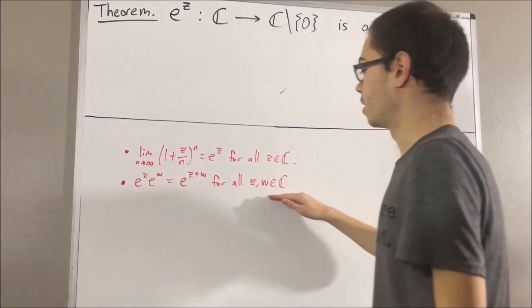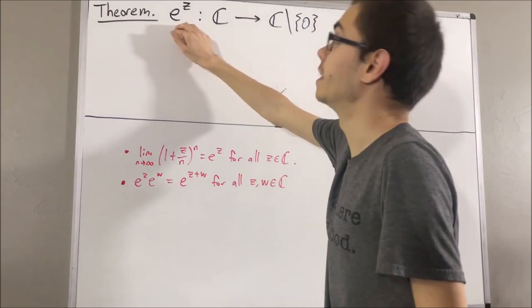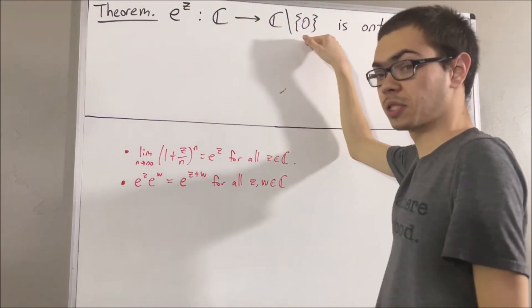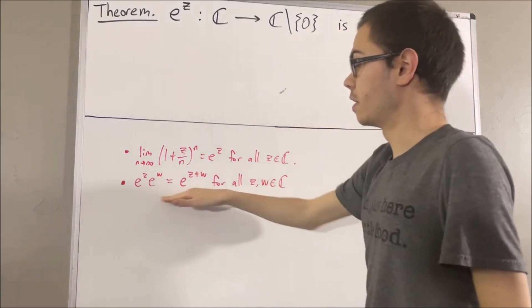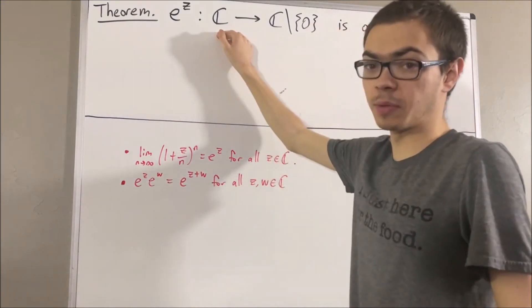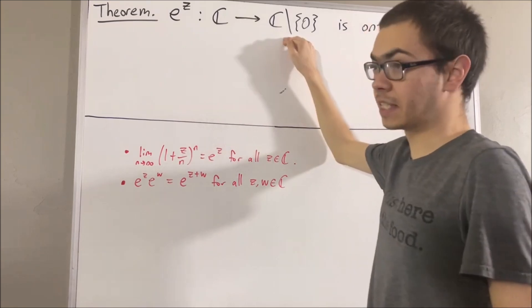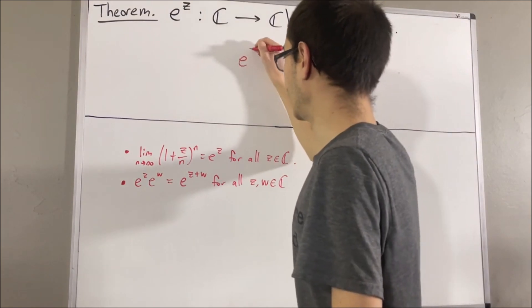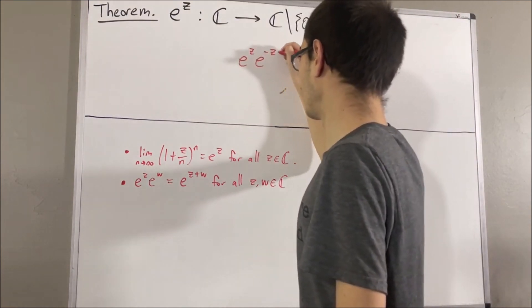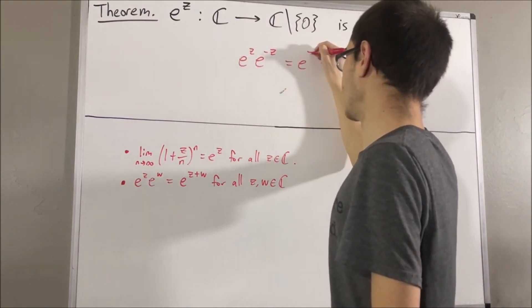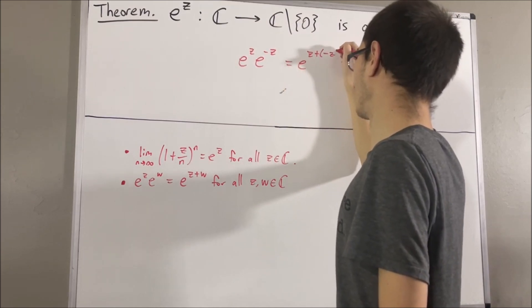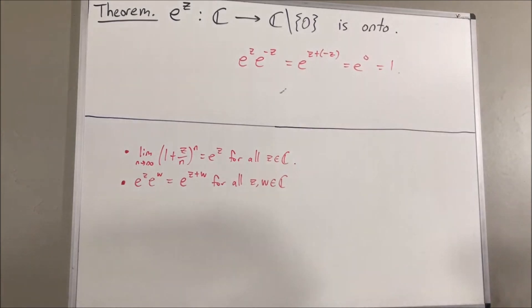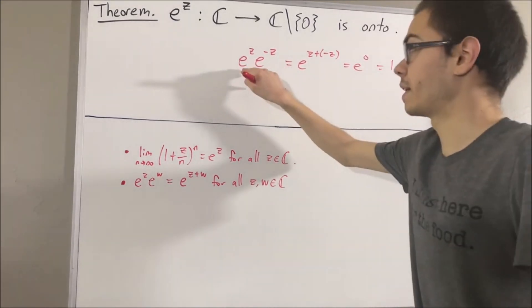This property tells us that the complex exponential function is a function from the complex numbers to the non-zero complex numbers. In other words, for every complex number z, e^z is a non-zero complex number. The reason is: e^z times e^{-z} equals e^{z + (-z)}, which is e^0, which is 1. So there's no way that e^z could be zero.